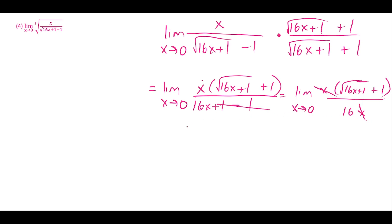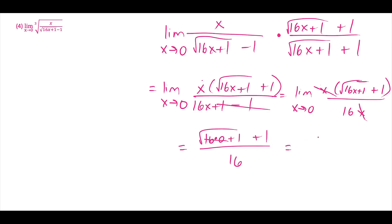Now the x's cancel, and we can plug in 0. When we plug in 0, we get (√(16·0 + 1) + 1)/16, which is (√1 + 1)/16 = (1 + 1)/16 = 2/16, which reduces to 1/8.